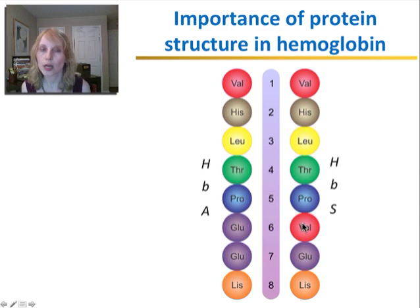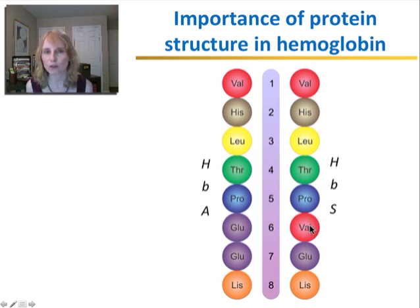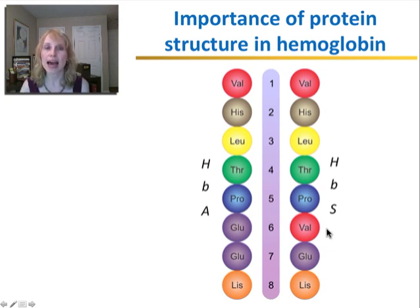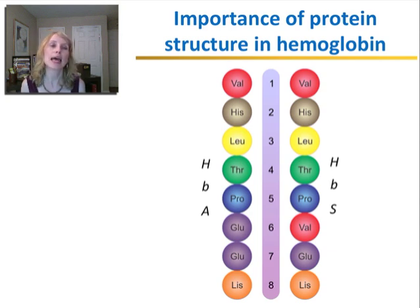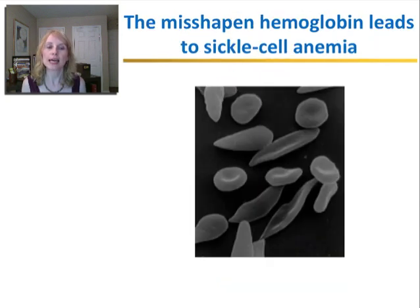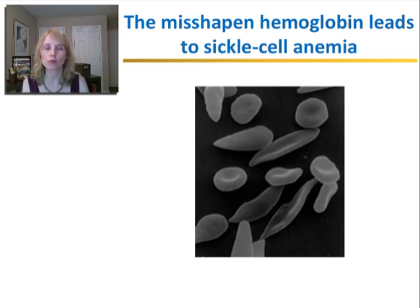You might wonder: if hemoglobin has hundreds of amino acids, how does changing one make a difference? Well, it does. Each amino acid has a different variable group, and this variable group affects how the protein folds — whether that amino acid is able to form hydrogen bonds, van der Waals interactions, or ionic bonds with other amino acids. So changing just one can disrupt the shape, and the shape of the protein can disrupt how it functions. The abnormal hemoglobin actually clumps together to form rods that even disrupt the shape of the red blood cells.